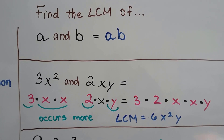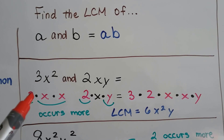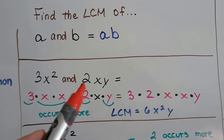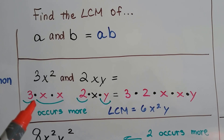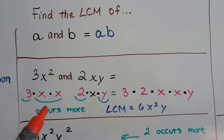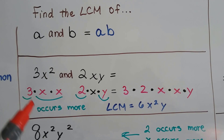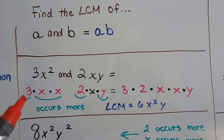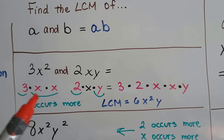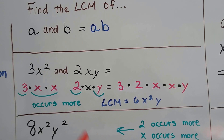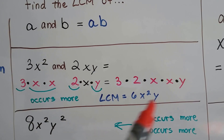Let's find the least common multiple of 3x² and 2xy. We factor 3x² as 3 times x times x, and 2xy as 2 times x times y. Now, where does the 3 occur the most? It only occurs in the first expression, so we use it. Where does the x occur the most? There are two x's in 3x² but only one in 2xy, so we use the two x's. There's only one 2 in the second expression, so we include that, and there's only one y, so we include that too.